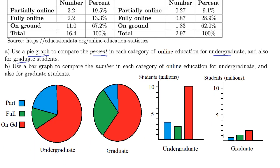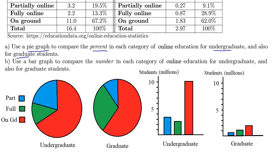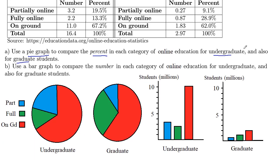So we're going to do two different pie graphs here comparing these amounts. I've got a pie graph here for undergraduate. I've color coded it: blue is the partially online, green is the fully online, and red is the on-ground. The entire circle represents 100%, and we're looking at the percentages for undergraduate.